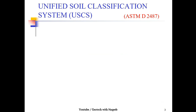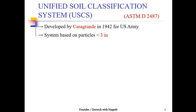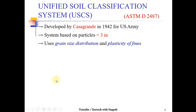The USCS was developed by Casagrande in 1942 for the US Army. The system is based on particles having a size less than three inches, so it does not deal with particles greater than three inches. It uses grain size distribution and plasticity index — meaning you must have percentage sand, percentage gravel, percentage fines, liquid limit, plasticity index, and plastic limit.